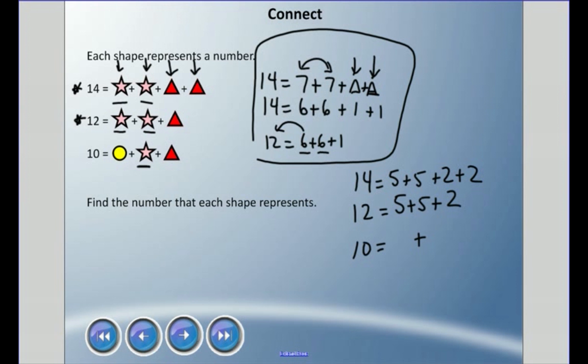But we do know that the star is a five and the triangle is a two. 5 + 2 right here is seven. What is left over to get to the 10? That means three. So we're saying the star equals 5, the triangle equals 2, and the circle has to equal 3.